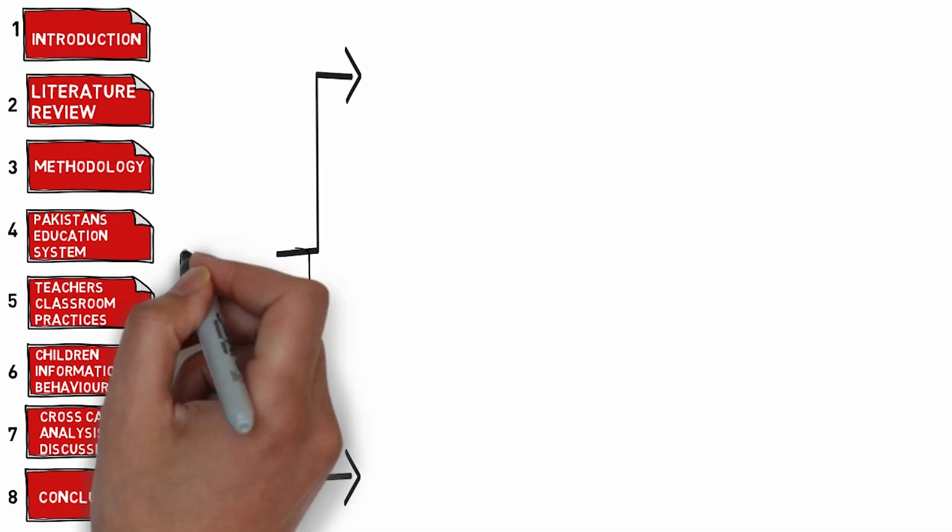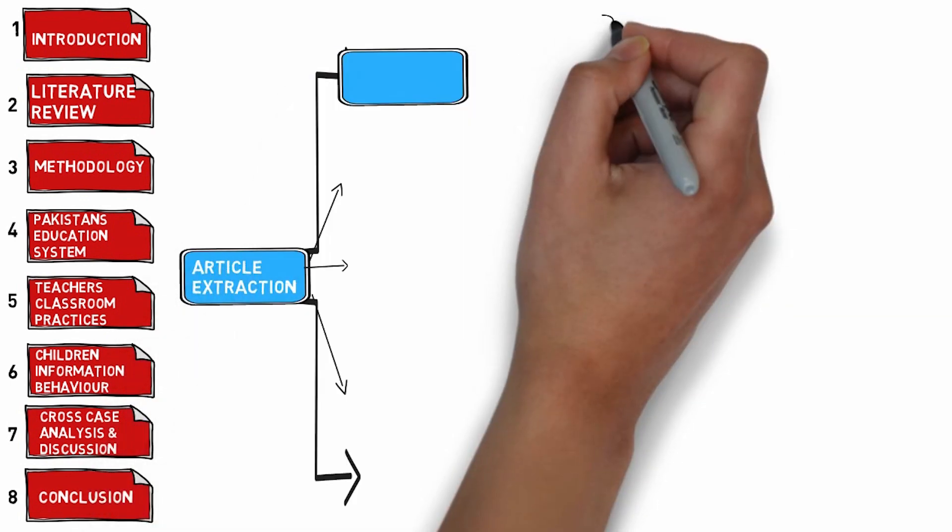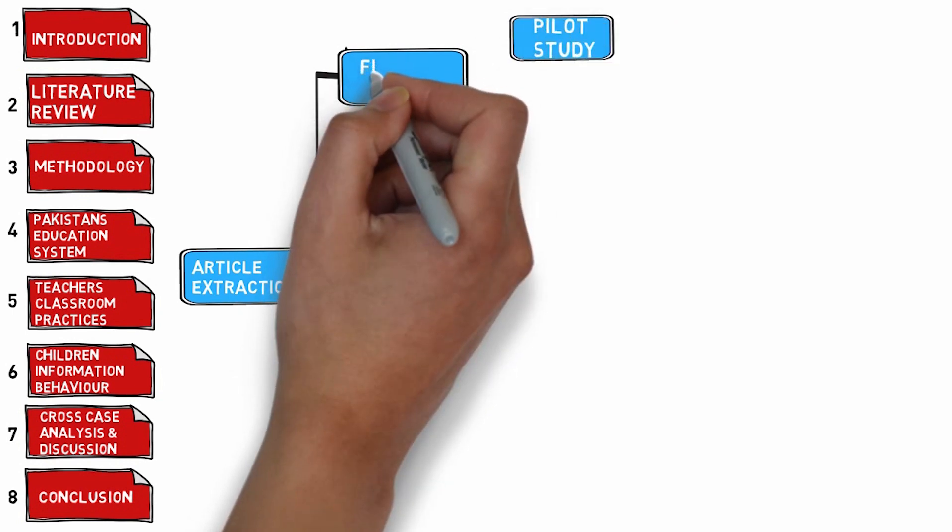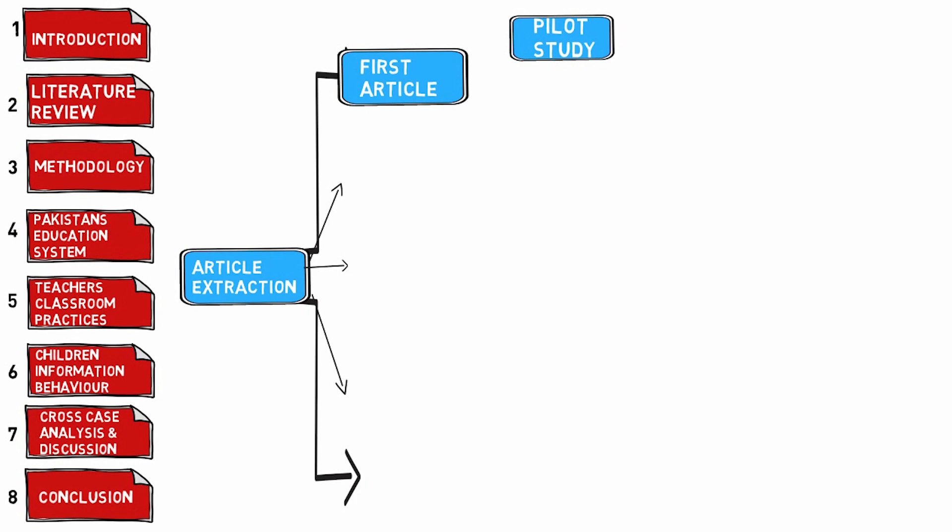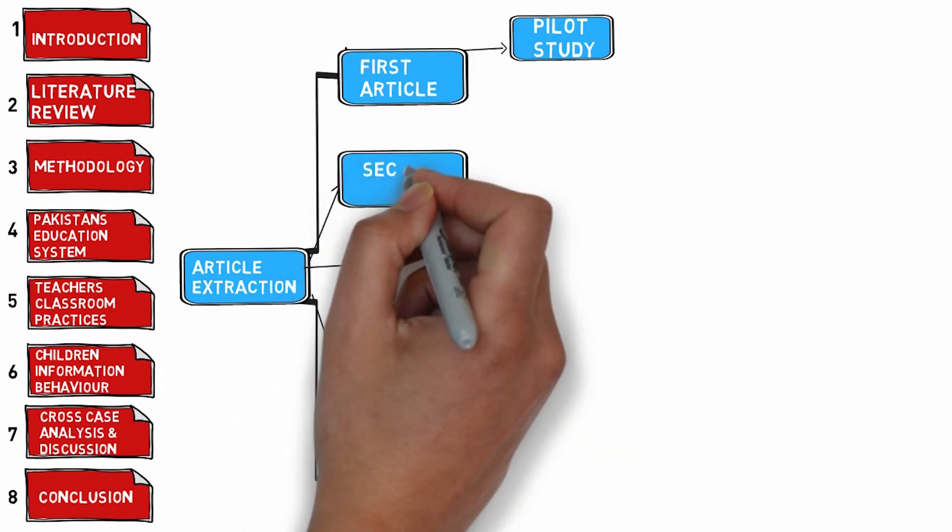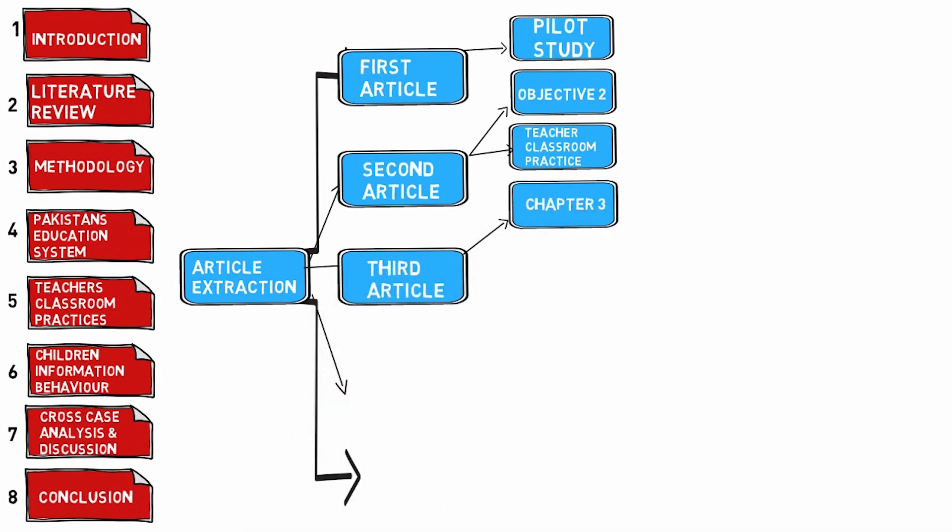So now I'll tell you how I extracted articles from my chapters. As I told you, first I conducted a pilot study, so my first article was based on my pilot study. The second article was based on the second research question, that was teachers' classroom practices. The third article was based on my third chapter, which was of study methodology.